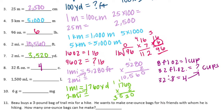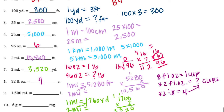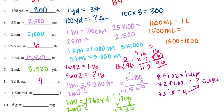1,500 milliliters is equal to how many liters? We know that 1,000 milliliters is equal to 1 liter. So if we have 1,500 milliliters, how many liters is that? We can divide 1,500 divided by 1,000, and we'll get 1.5 liters.